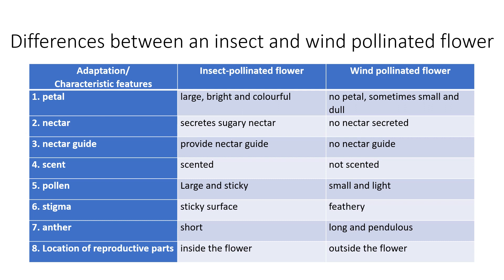Regarding the presence of a nectar guide: the insect-pollinated flower provides a nectar guide for insects to locate the sugary nectar, while the wind-pollinated flower does not have a nectar guide.